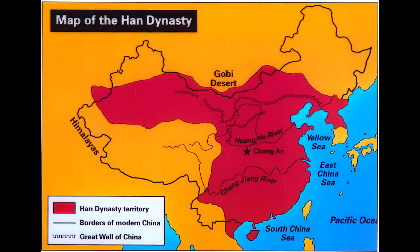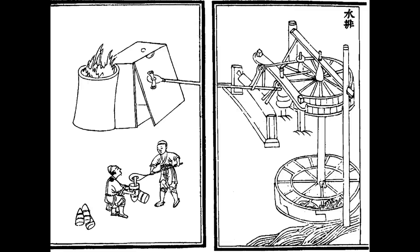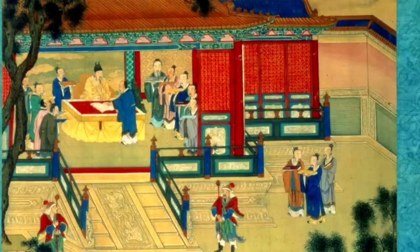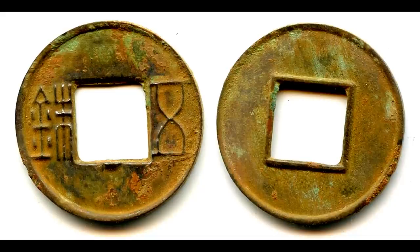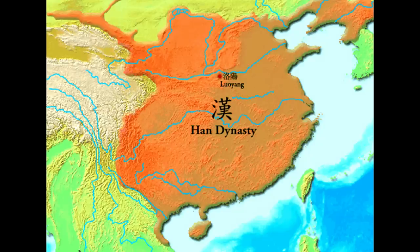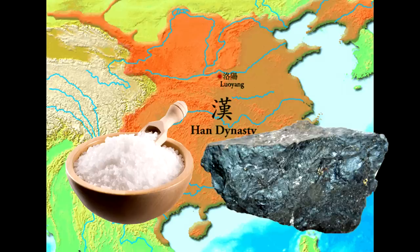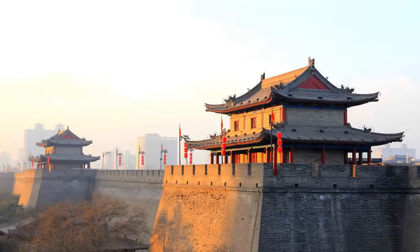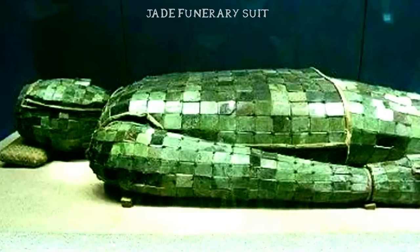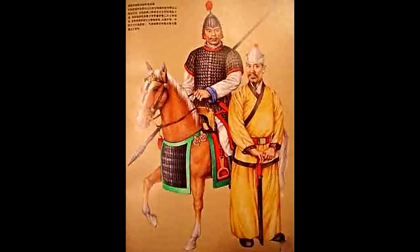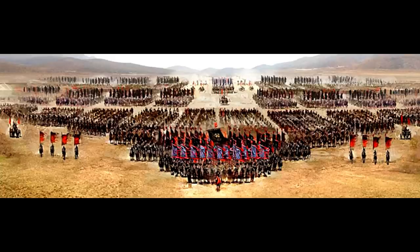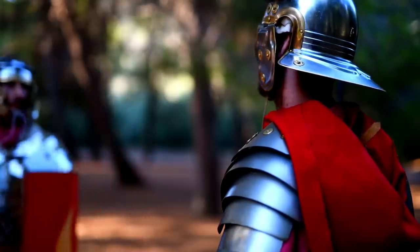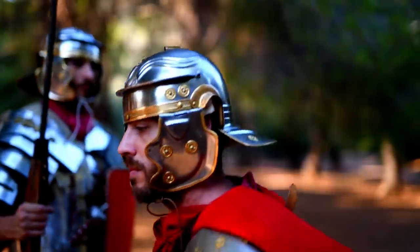The Han period was one of cultural impact and advances: the invention of paper, the seismoscope, the water wheel, and many other forms of complex structural engineering. The economy prospered, and the same coinage used during Han rule would be used all the way up to the Tang Dynasty in 618. There was also the first nationalization of salt and iron industries around 160 BC. This means the Han Empire was a very well-established and economically secure empire that could afford to fully equip, train, and maintain its forces.